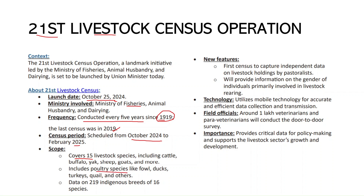There are data on 219 indigenous breeds of 16 species. New features include being the first census to capture independent data on livestock holdings of pastoralists — nomadic pastoralists were not included in previous censuses but are included this time. It will also provide information on the gender of individuals primarily involved in livestock caregiving.